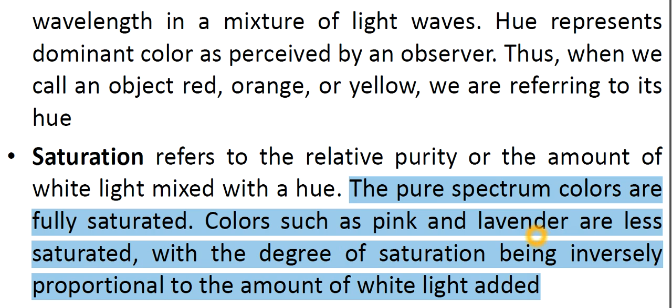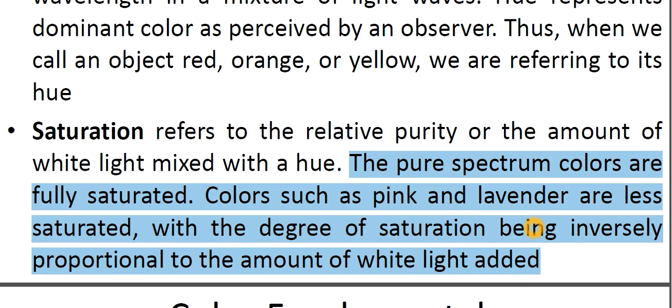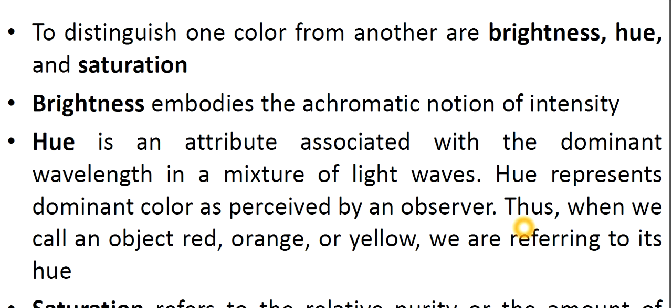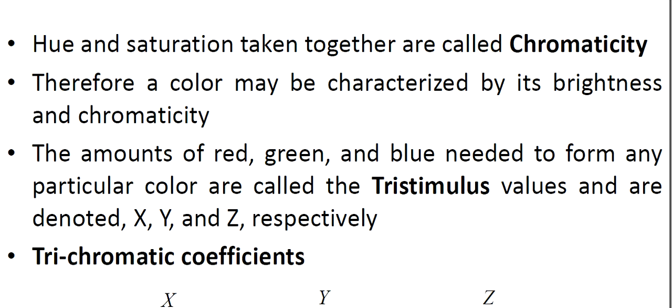So I hope this is sufficient for today's lecture. Three important technical terms are brightness, hue, and saturation. As I asked you one question about chromaticity, that is chrominance, I just want to tell you that hue and saturation taken together will be known as chromaticity. Therefore, a color may be characterized by its brightness and chromaticity.